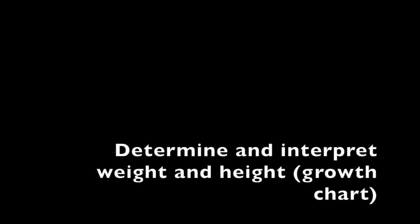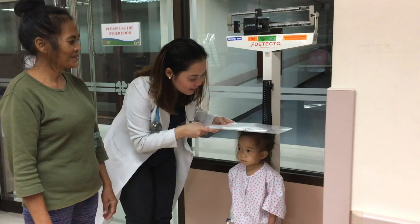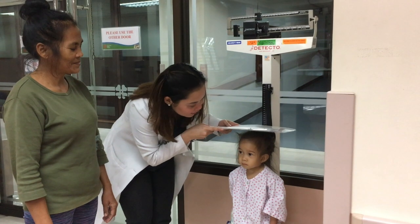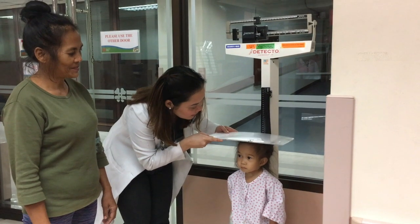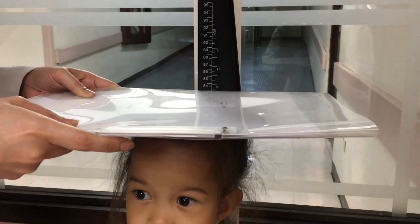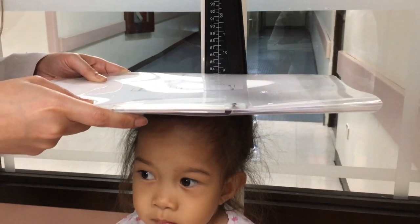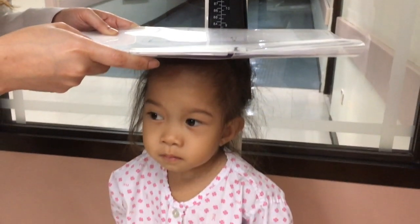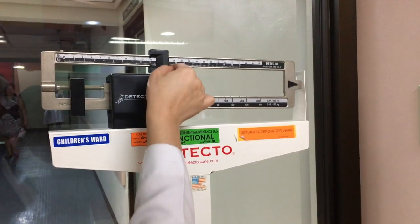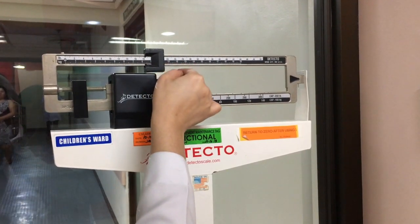Next, determine the weight and height and interpret it using the WHO Growth Chart to know if the child is wasted, stunted, normal for age, overweight, or obese.